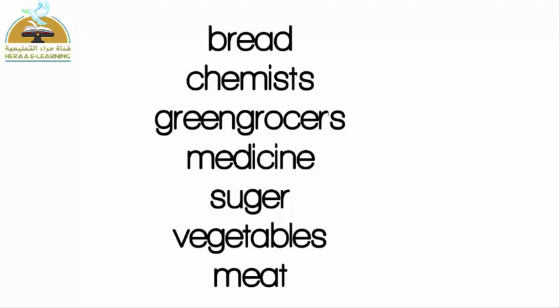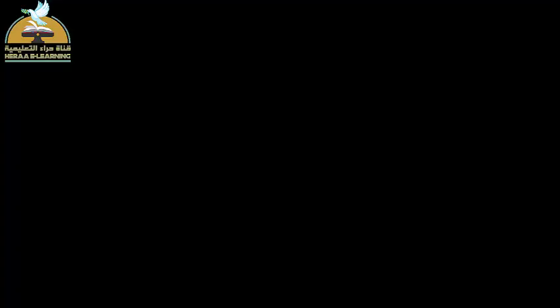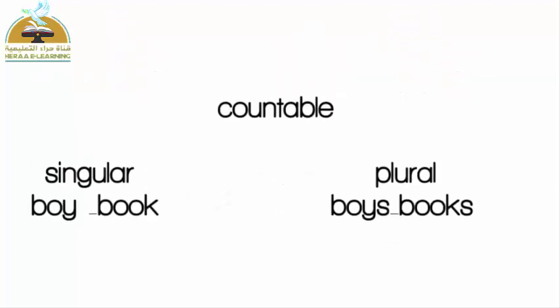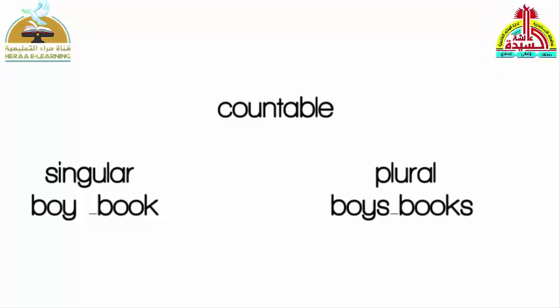نشوف بعد كده حاجة تانية: هنتكلم عن nouns - بعض الأسماء. الـ nouns عندنا بتنقسم لحاجتين: أسماء countable - اللي هي عبارة عن singular وplural. زي boy ولد، book كتاب. هل ينفع boy تتحول لـ plural؟ بالضبط، نخلي boys نضيف s. book نضيف s تبقى books.